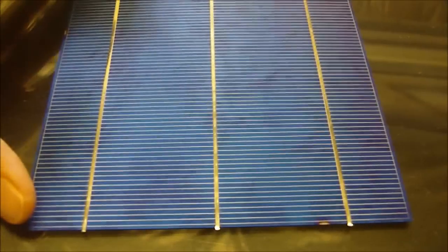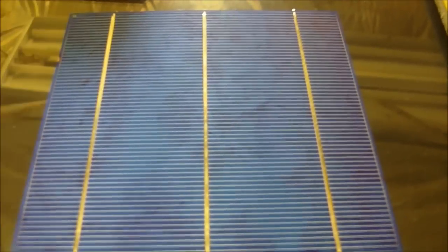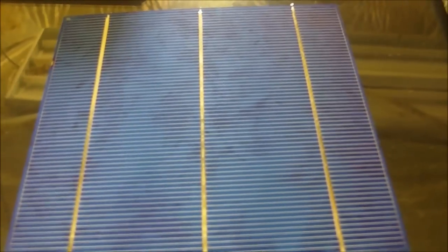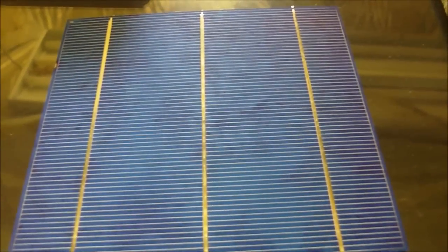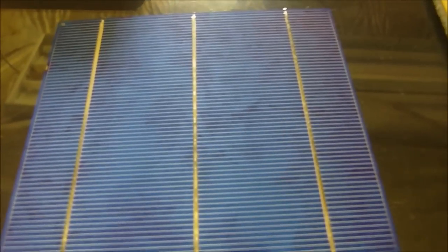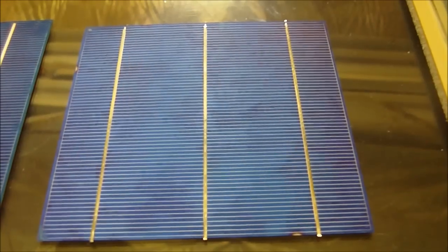This one here is a full-size cell, six inch by six inch, but you can also buy these cells in three by six, five by five, two by three, one by three, one and a half by two, one by six, three by six. Those are the sizes I've seen so far, but there could be some others.